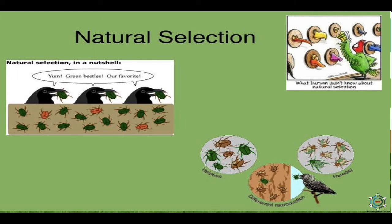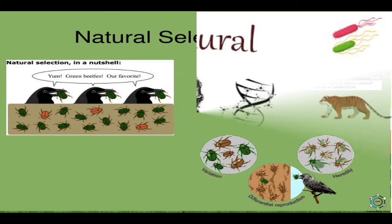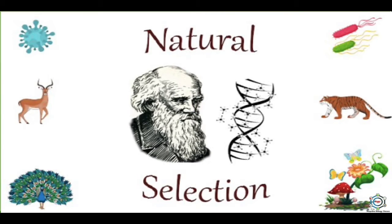Natural selection keeps an efficient check on the populations of organisms. The individuals selected by nature pass on their useful variations to the next generation. In each generation, new favourable varieties appear and supplement the favourable variations inherited from parents, leading to the formation of new species. These are the main factors of the theory of Darwinism.